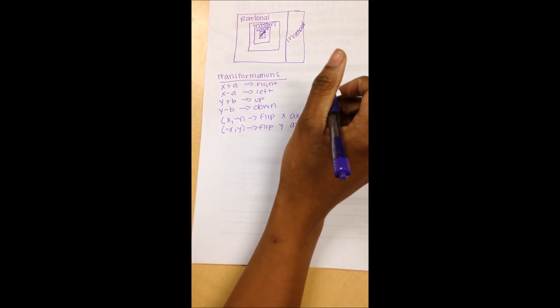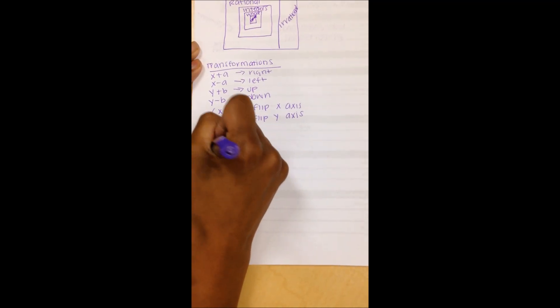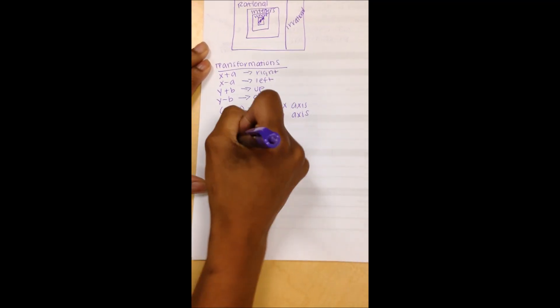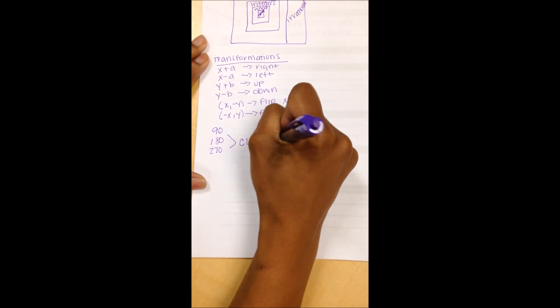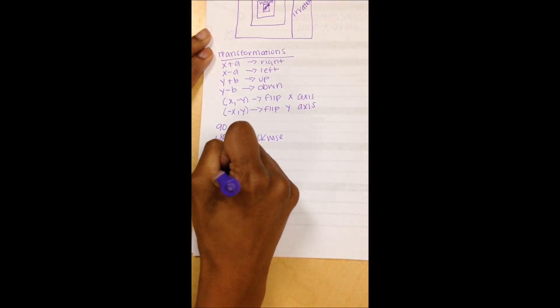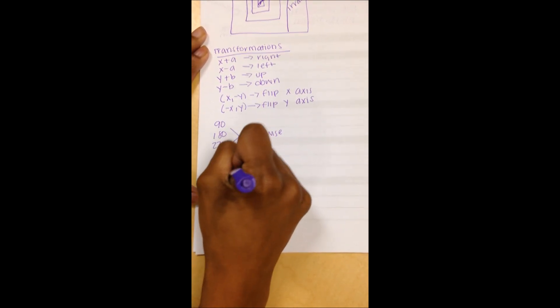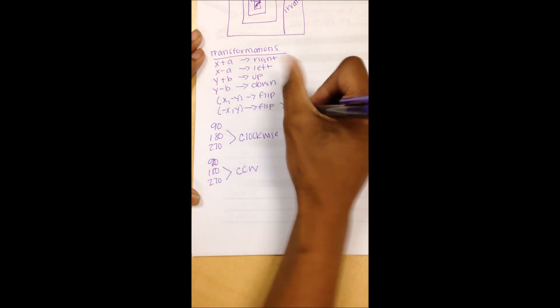Now for the rotations, it's a little more tricky. I will write my degrees twice: 90, 180, 270. Label these clockwise. Label again 90, 180, 270, label these counterclockwise.